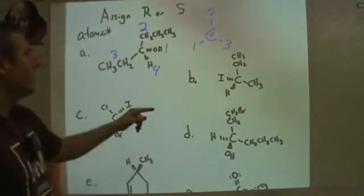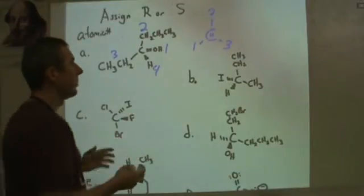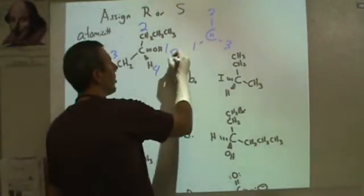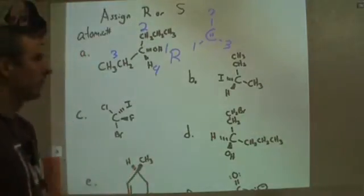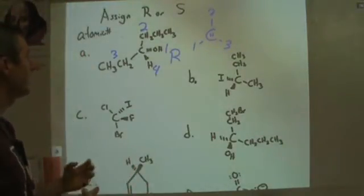Now when you set that up, if your numbers go clockwise, one, two, three, then what you've done is determine that that's an R stereocenter. And if they go counterclockwise, then it will be S. That's how you have to go through and do it.